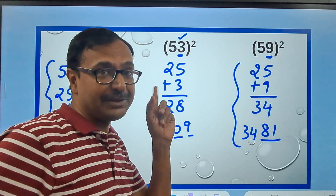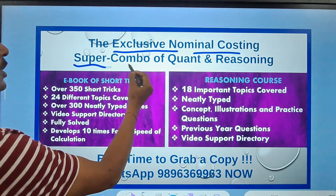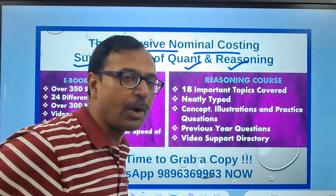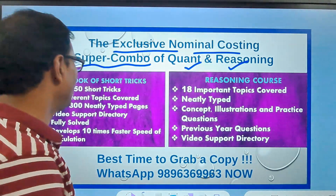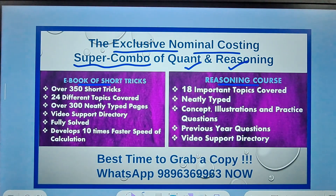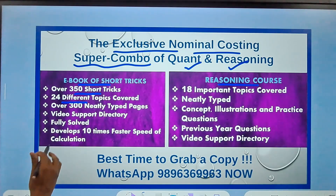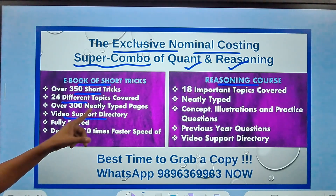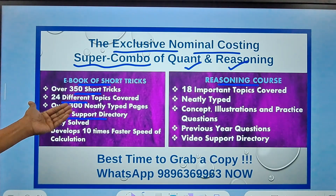Before that, let me tell you about the exclusive super combo of quant and reasoning. I get so many queries every day for this. The ebook of short tricks and the reasoning course have enabled hundreds of students to qualify government placement exams and school-level olympiads. We have around 350 short tricks, 24 different topics of quant covered, and video support is also provided — so if you don't understand from the ebook, you can watch the video.